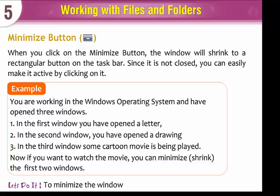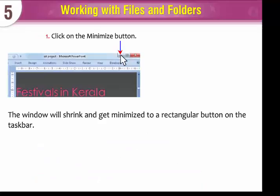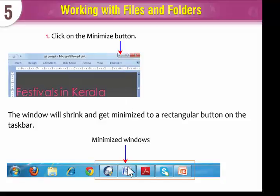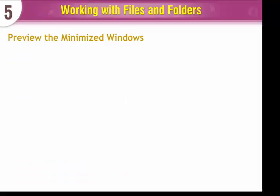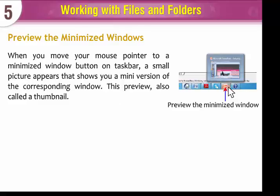Let's do it. To minimize the window, click on the minimize button. The window will shrink and get minimized to a rectangular button on the taskbar. Preview the minimized windows. When you move your mouse pointer to a minimized window button on the taskbar, a small picture appears showing a mini version of the corresponding window, also called a thumbnail.